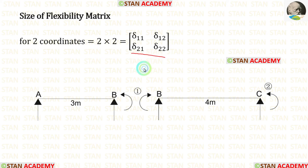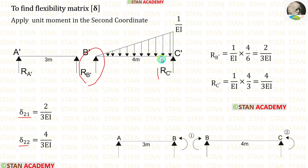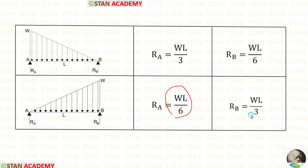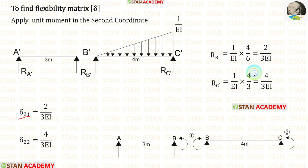Now let us find the second row of the flexibility matrix. We apply a unit moment at the second coordinate. When we apply unit movement at the second coordinate, the moment is 1 at C and 0 at B. Using that, we construct the diagram. For delta 2,1 we find RB', and for delta 2,2 we find RC'. The formulas are: RB' = WL/6 and RC' = WL/3. With W = 1/EI and L = 4, we get RB' = 2/(3EI) and RC' = 4/(3EI).